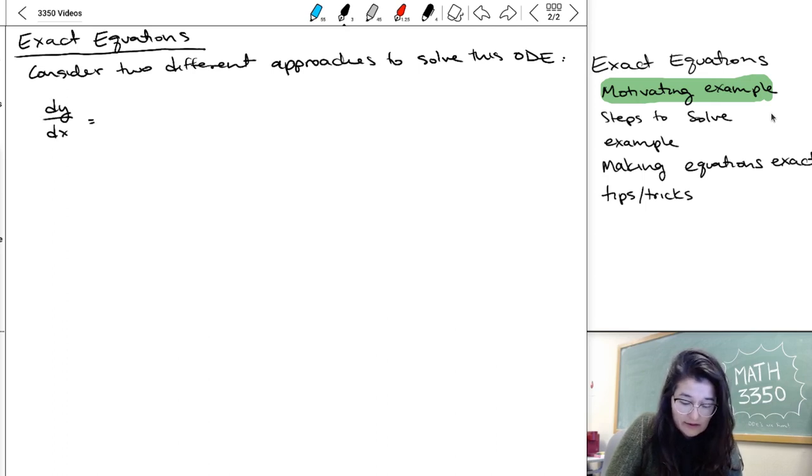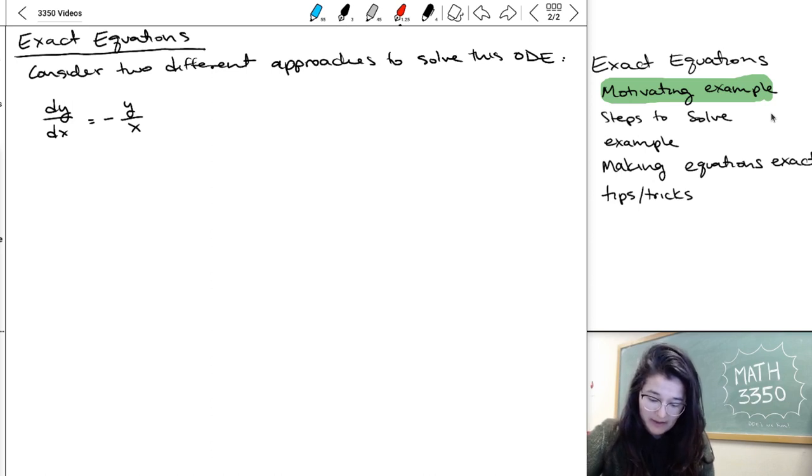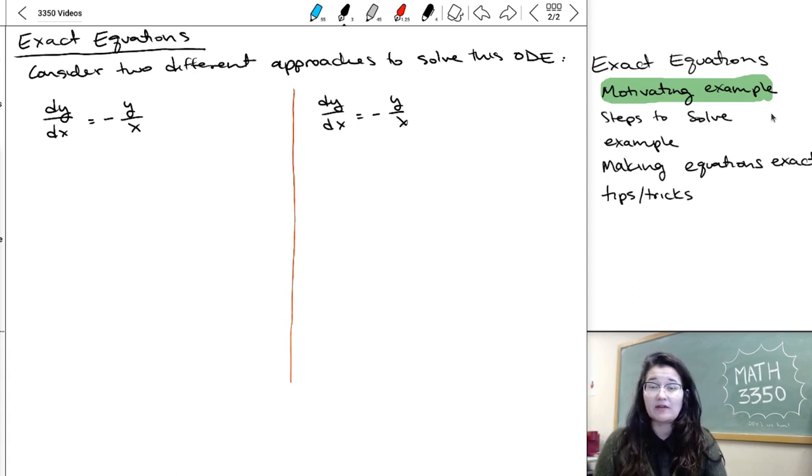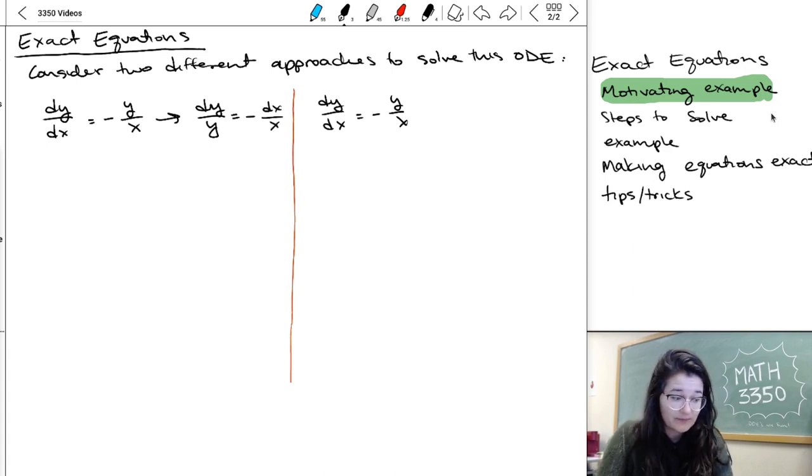It's dy/dx equals minus y over x. I'll go ahead and split my page in half so you can see the two different examples. On the left side, I'm going to solve it as a separable equation because it is. So I can move all the y's to one side and all the x's to the other, and then I would just go ahead and integrate.